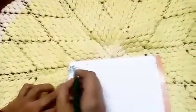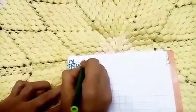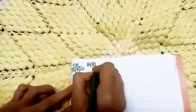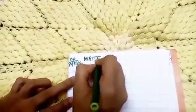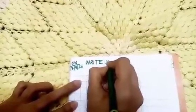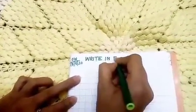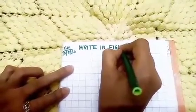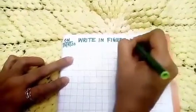And next you will write write in figure. Okay, so start writing. First write W then R I T E write, I N in, F I G U R E, write in figure.